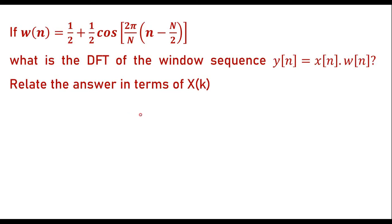In this video, let me consider one numerical on DFT. If W of N is equal to half plus 1 by 2 cos 2 pi by N into N minus N by 2, what is the DFT of the window sequence Y of N equal to X of N into W of N?